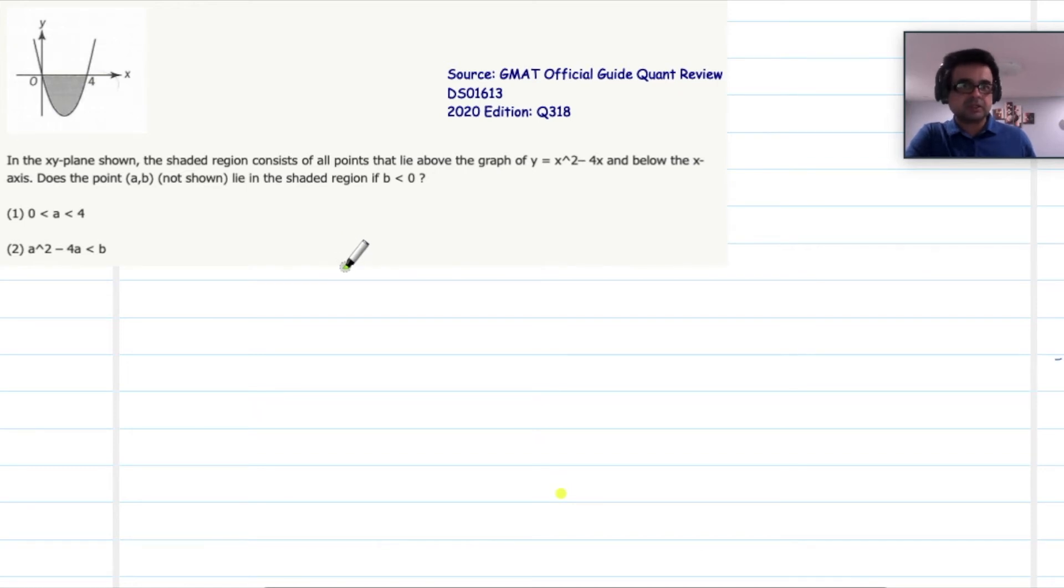Question number 318 in GMAT Official Guide Quant Review 2020. This question is also present in some of the latest quant reviews, but probably as a different question number.